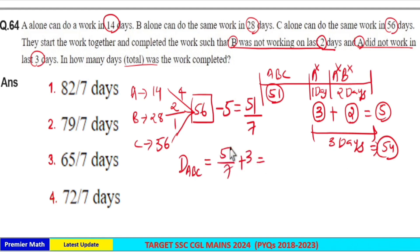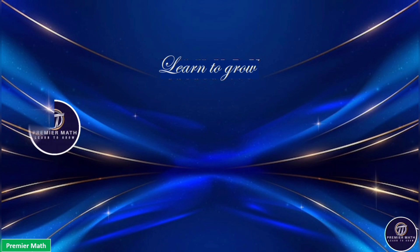So total 7 into 3, 21 plus 51 is 72 divided by 7 days. Option 4 is your answer.